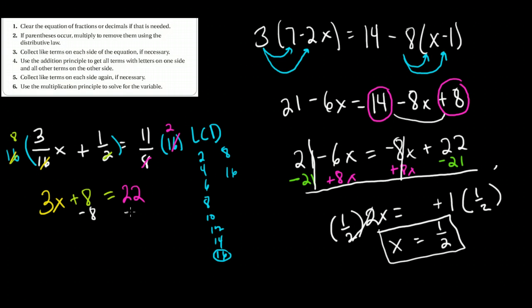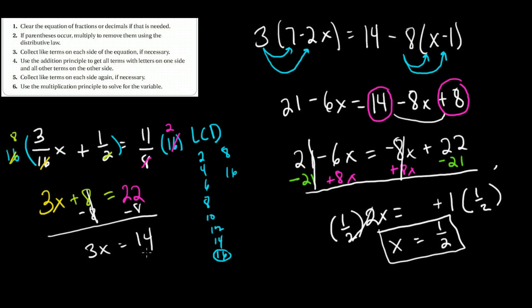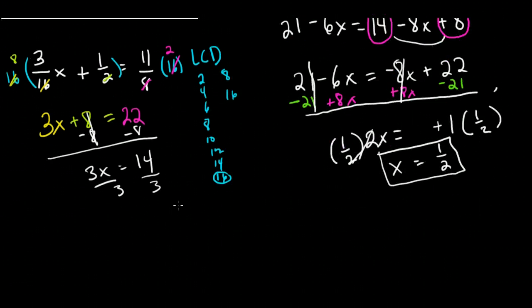Here's the addition principle in practice. Subtract 8 from both sides — those cancel out to zero. I have 3x is equal to 14. Then I divide both sides by 3, and x is equal to 14 thirds. All done.